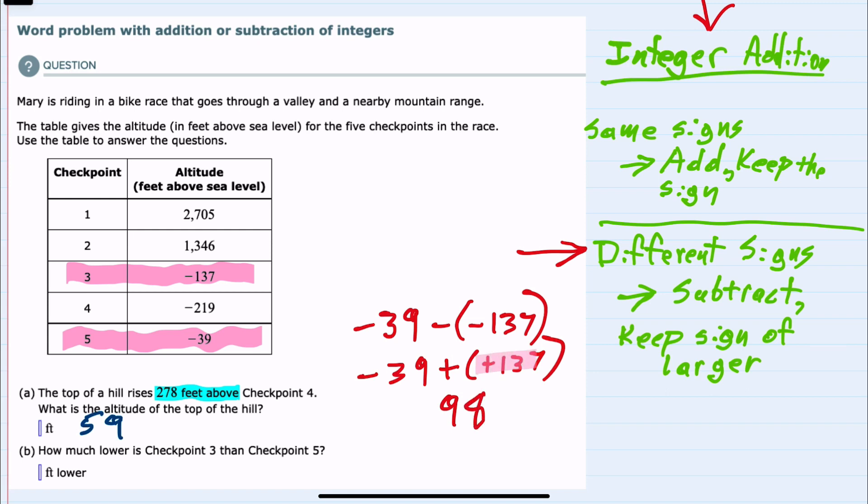So we would say that checkpoint 3 is 98 feet below checkpoint 4.